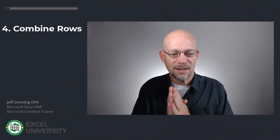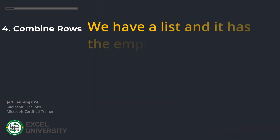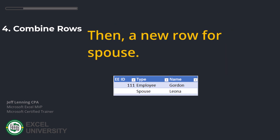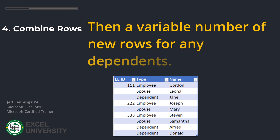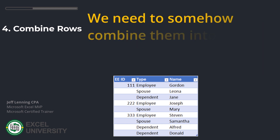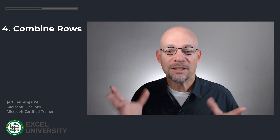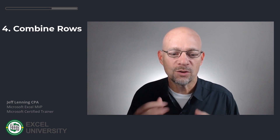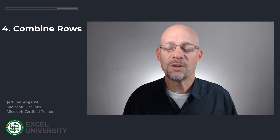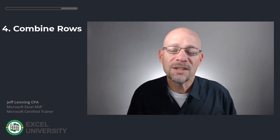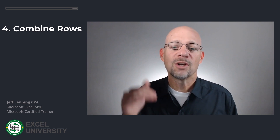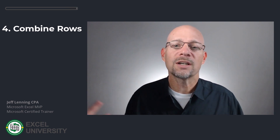Next question is from Joanne. Joanne says: Jeff, we have a list with the employee ID and name on the first row, then a new row for spouse, then a variable number of new rows for any dependents — we need to somehow combine them into a single row. That task used to be fairly challenging and we might use something like a macro or custom VBA code to accomplish that. Nowadays it's pretty straightforward with Power Query. I have a full step-by-step written tutorial — just check out the link below.